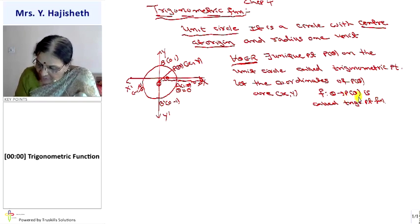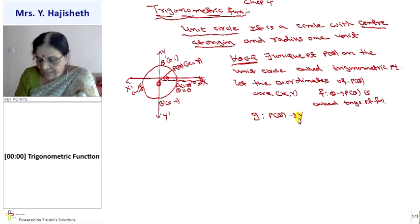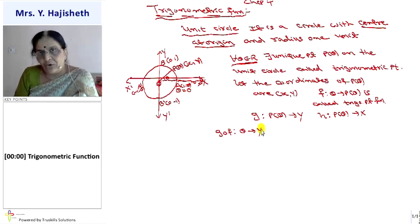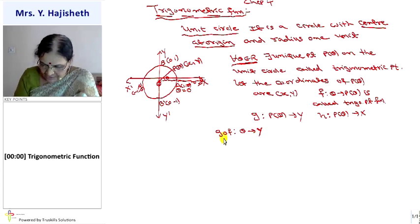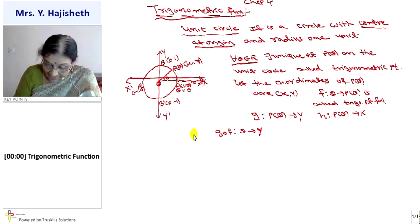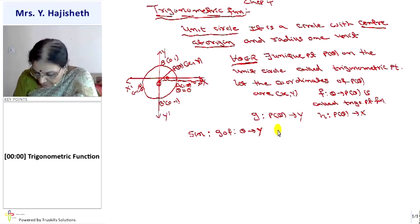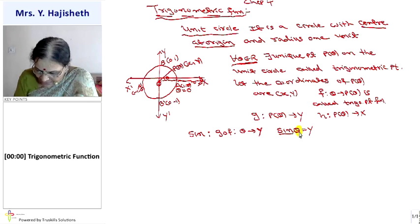F is a function from theta to P(theta). G is a function from P(theta) to y, and H is a function from P(theta) to x. The composite function G∘F is a function from theta to y. For every theta belonging to ℝ, there exists a unique y-coordinate of the trigonometric point P(theta). So G∘F is also called the sine function. Sine theta is defined as y.